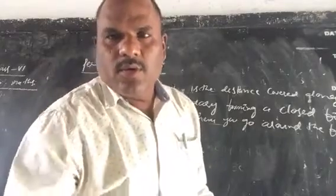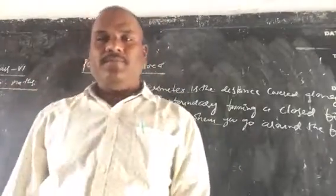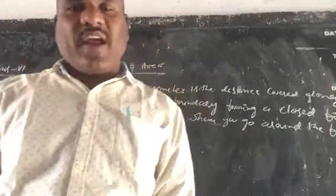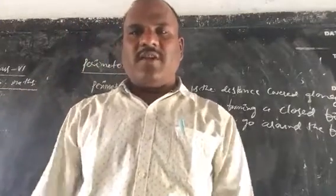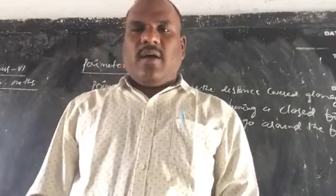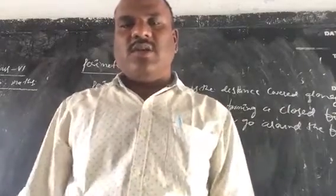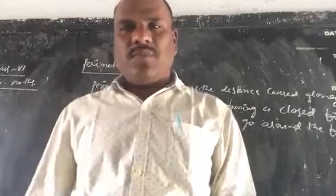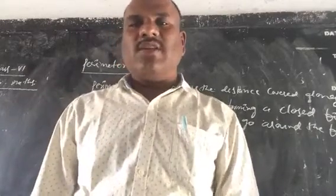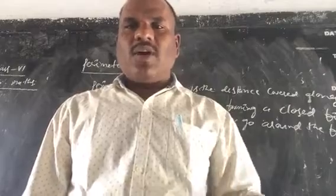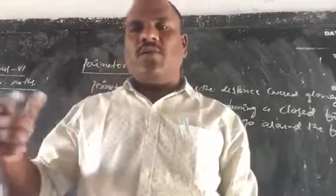Good morning students. Today I am going to explain about perimeter — perimeter of triangle, perimeter of square, and perimeter of rectangle. You might have learnt about these concepts in class 4th and class 5th. Let us recall all these concepts once again so that we can use them to solve problems.